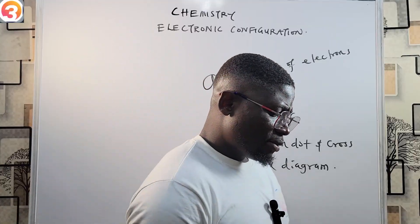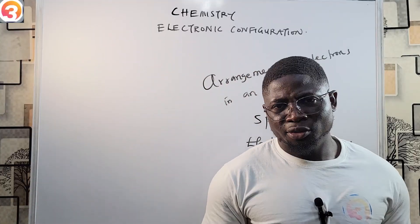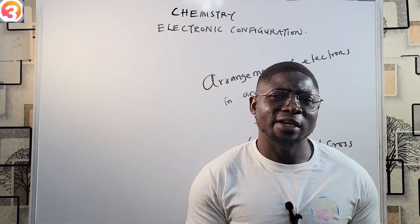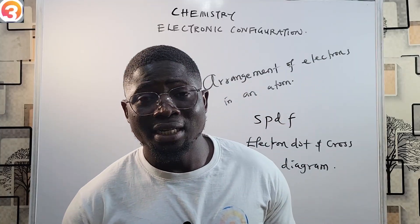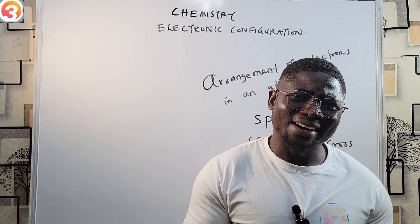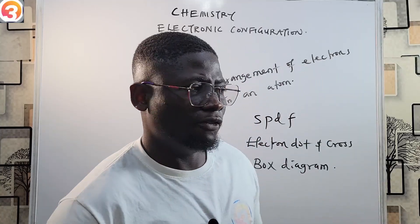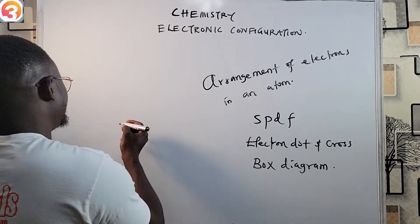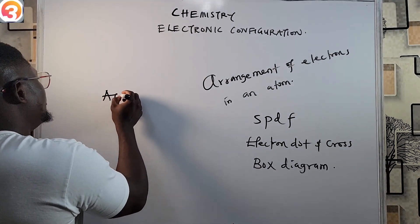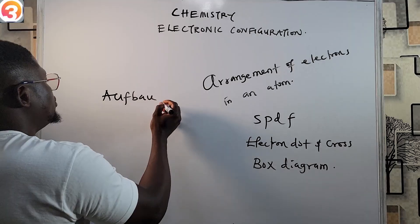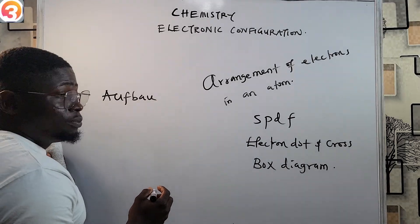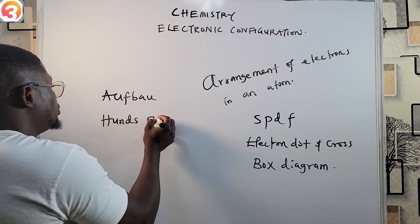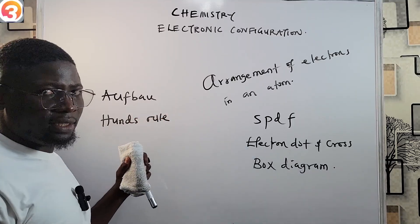Before we write electronic configurations, you have to know that there are rules that govern the writing of electronic configurations. Examples of those rules include: one, we have the Aufbau principle; two, we have Hund's rule of maximum multiplicity.